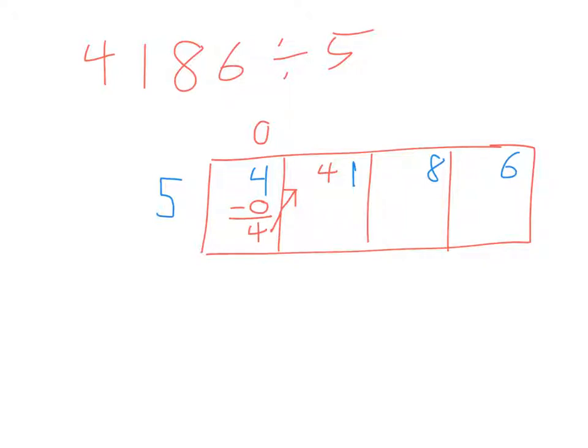Divide, multiply, subtract, bring down. How many times does 5 go into 41? Eight. Eight times 5 is 40. 41 minus 40 gives me 1. Bring it up. Start the process over.